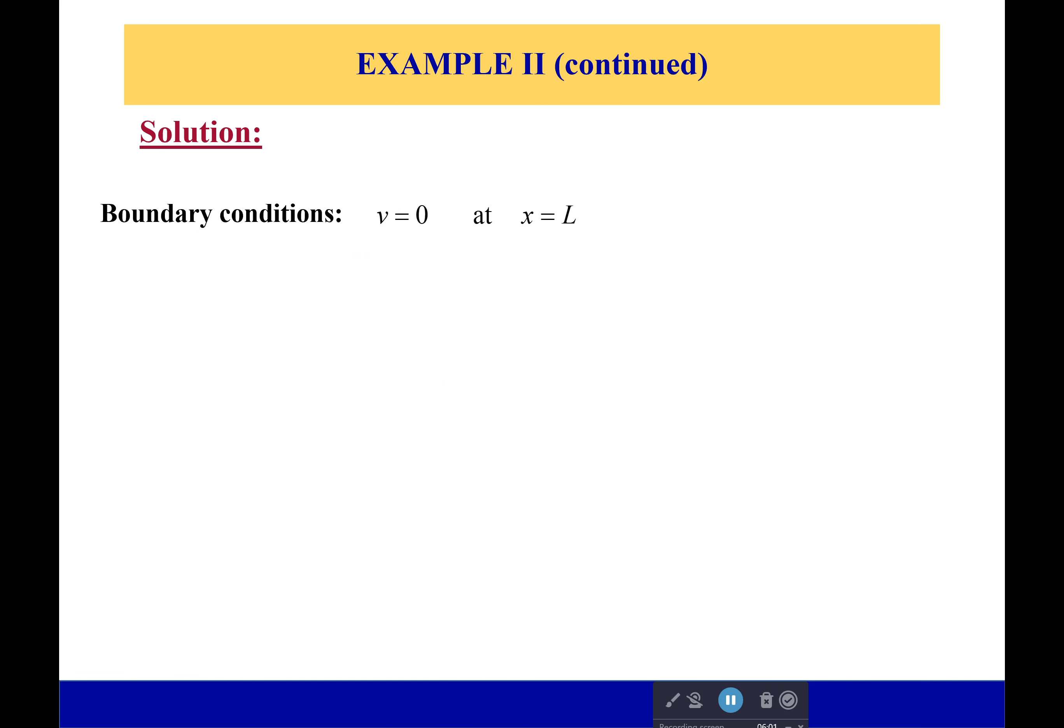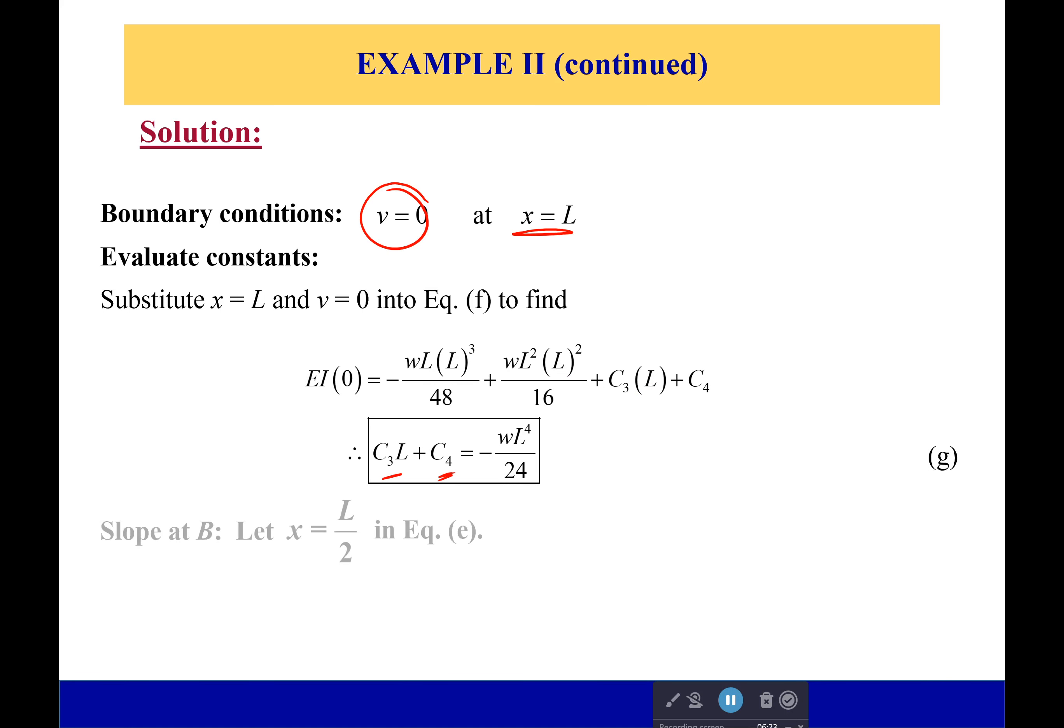So first off, boundary condition: we know the deflection is zero at that second support, which is at L. So we plug it in and we get, okay, well plug in L in here and none of them disappear. Oh my, I still got C3, I still got C4. It's not looking good—we're going to get stuck here. Hopefully not, but I think we're going to be okay.